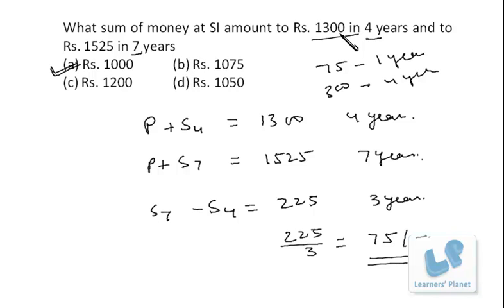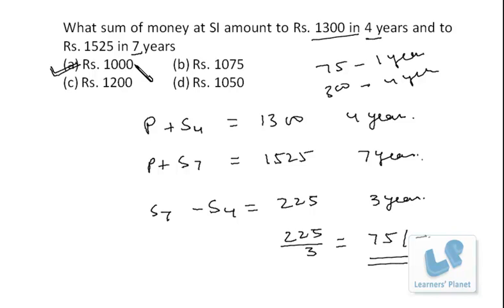Now just cross-verify: if 75 rupees per year for seven years, that is 75 into 7 equals 525, so the amount would be 1525. This satisfies both conditions, confirming that the option 1000 was correct. You can do the problem this way — even mentally after practice. Now let's take the next problem.